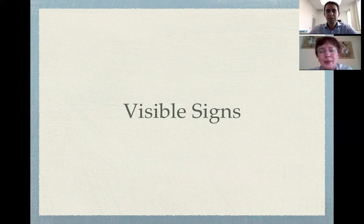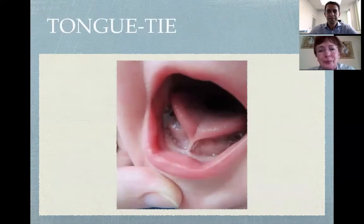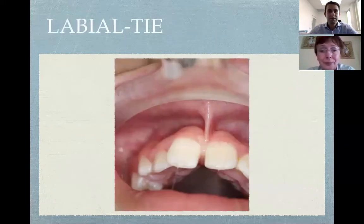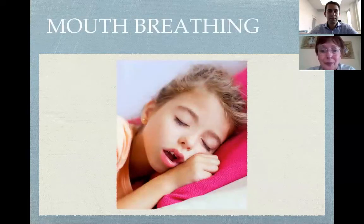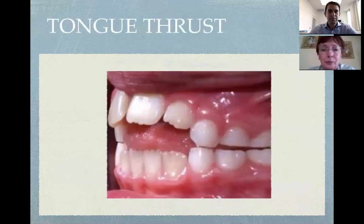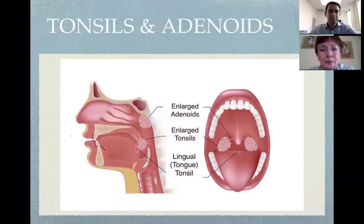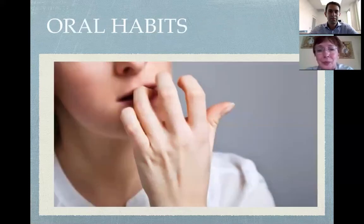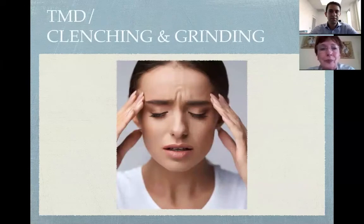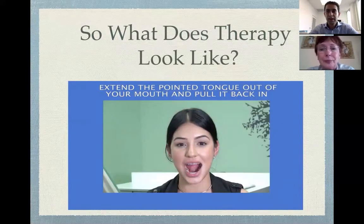Sanda, why don't you walk us through some visible signs of these issues? Yes — tongue tie, labial tie, mouth breathing during the day and night, tongue thrust, enlarged tonsils and adenoids, oral habits like nail biting, and TMD clenching and grinding. If patients have some of these issues, we can get them into therapy. Here's an example of what the therapy looks like.